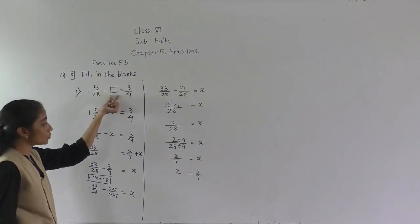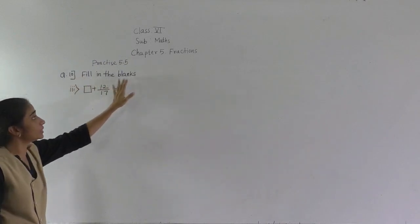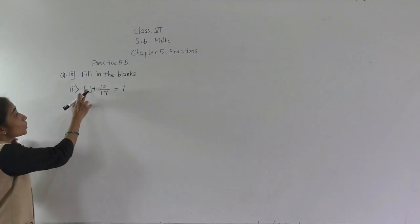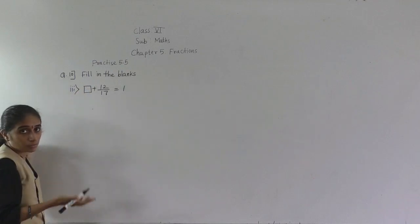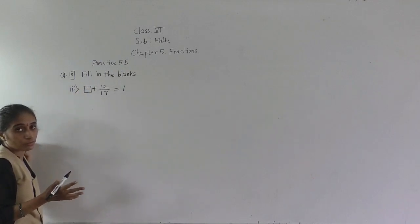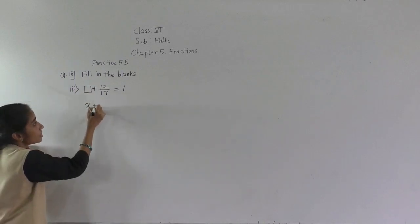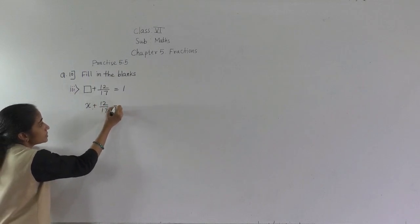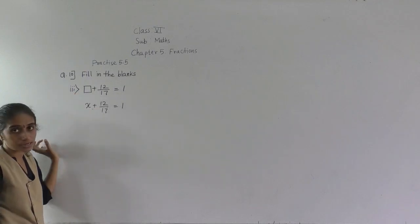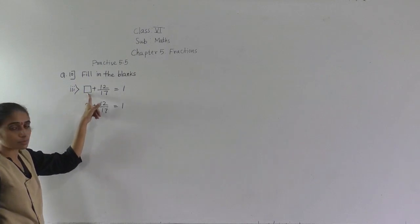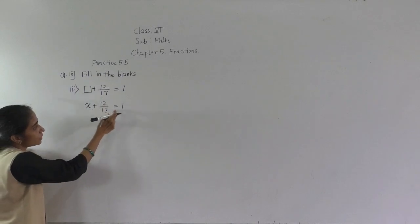Now for example number 3 from question number 10, fill in the blanks. A blank box is given — we have to write which number will come here. The number we don't know, we consider x. In the place of the blank box I will write x, so: x plus 12 upon 17 is equal to 1. Remaining things are written as equal — only in the place of the blank box I have written x.